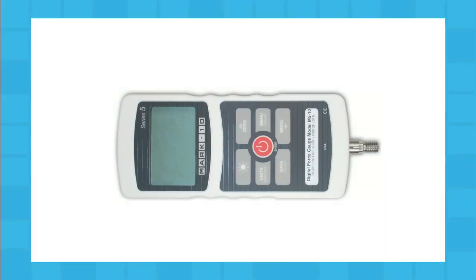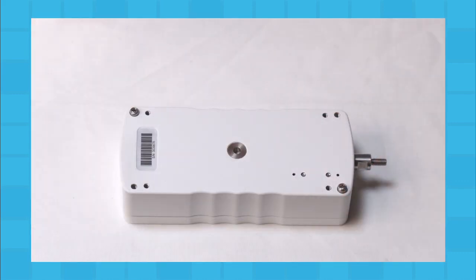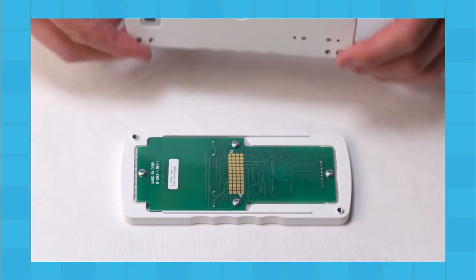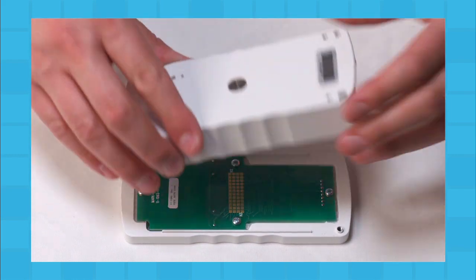To accommodate handheld or test stand mounting, the orientation of the load cell shaft may be flipped while the keypad and display remain upright. To reverse the orientation, separate the two halves of the housing, reverse, and reassemble.